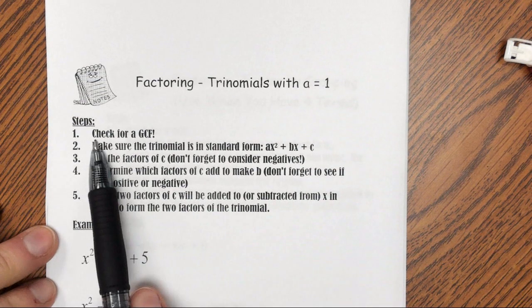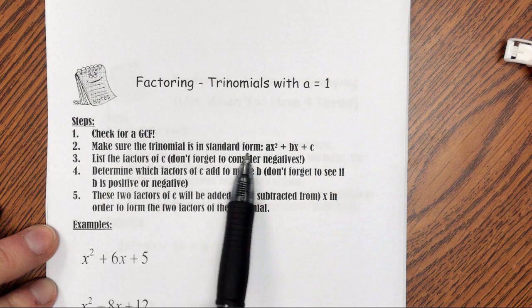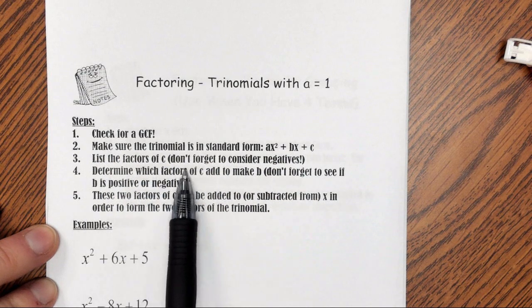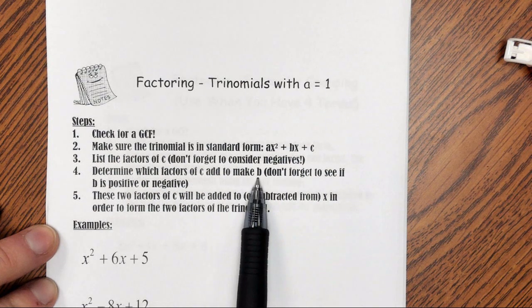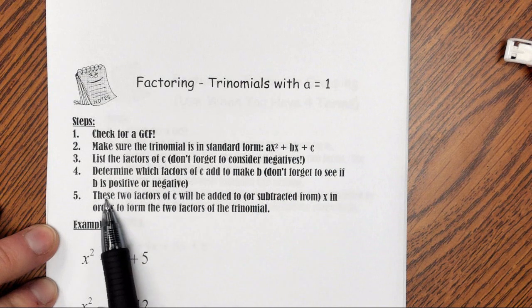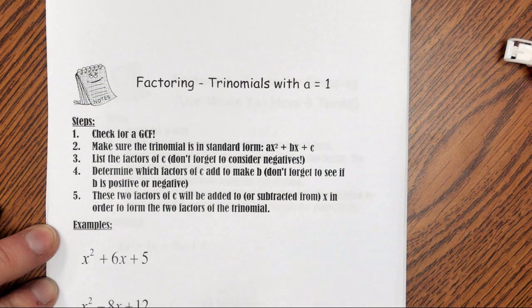So the first thing we want to do is check for a GCF, and then make sure the trinomial is in standard form, ax squared plus bx plus c. Then we're going to list the factors of c. Don't forget to consider the negatives. Determine which factors of c add to make b. Don't forget to see if b is positive or negative. And then these two factors of c will be added or subtracted from x in order to form the two factors of the trinomial.